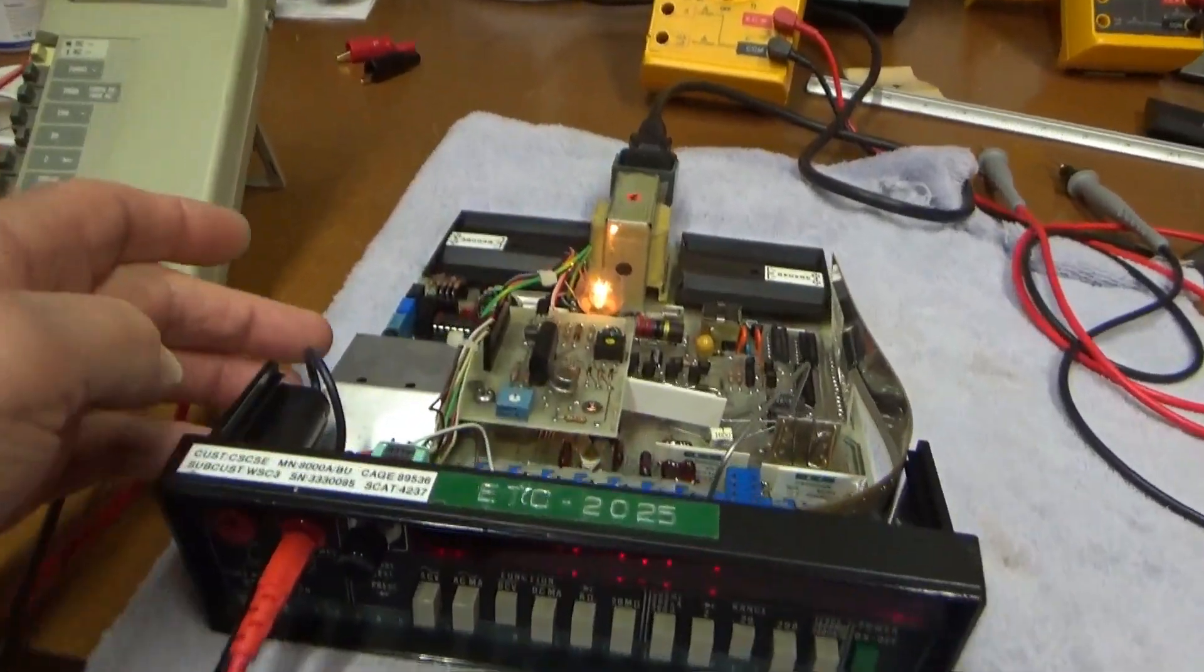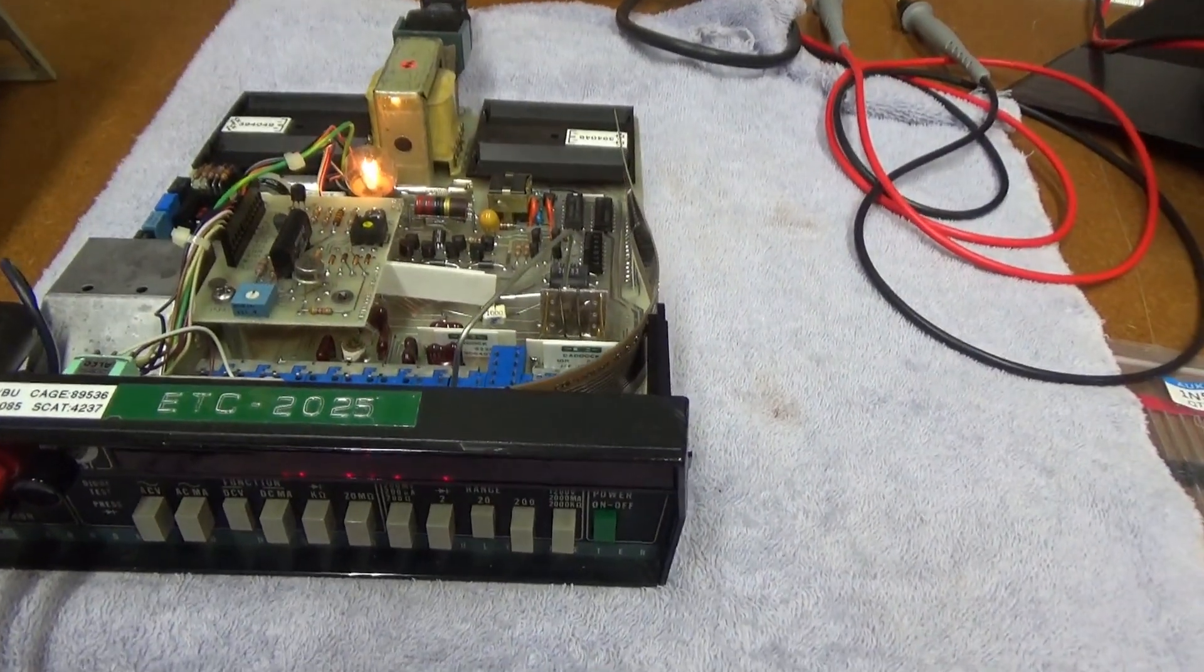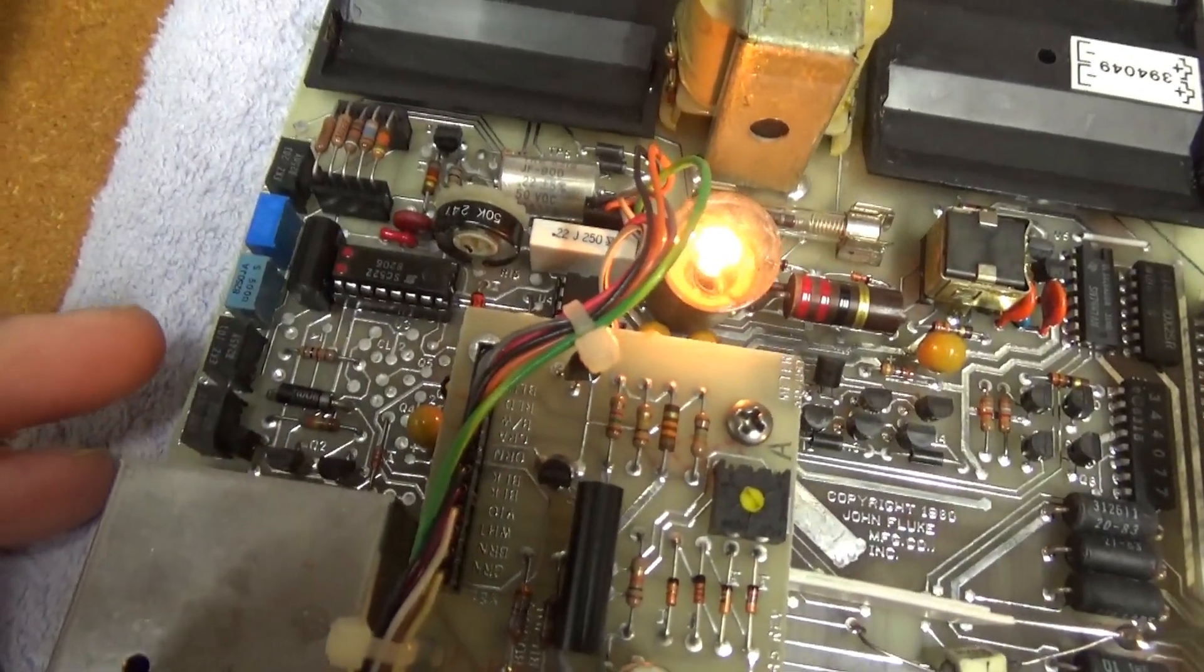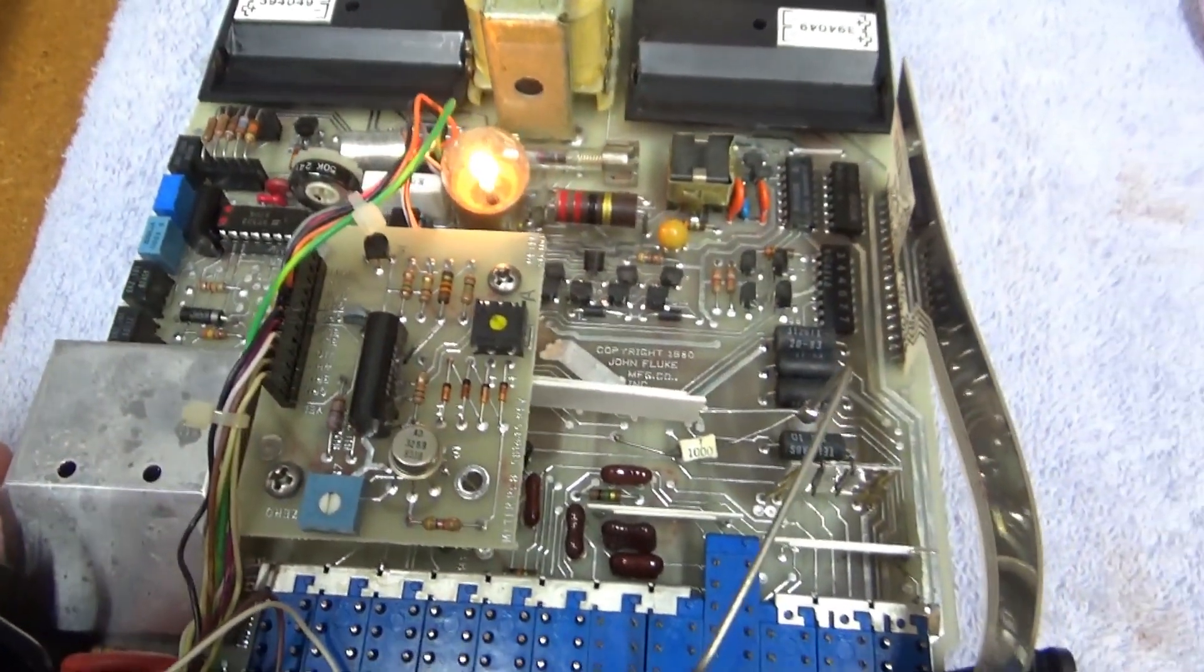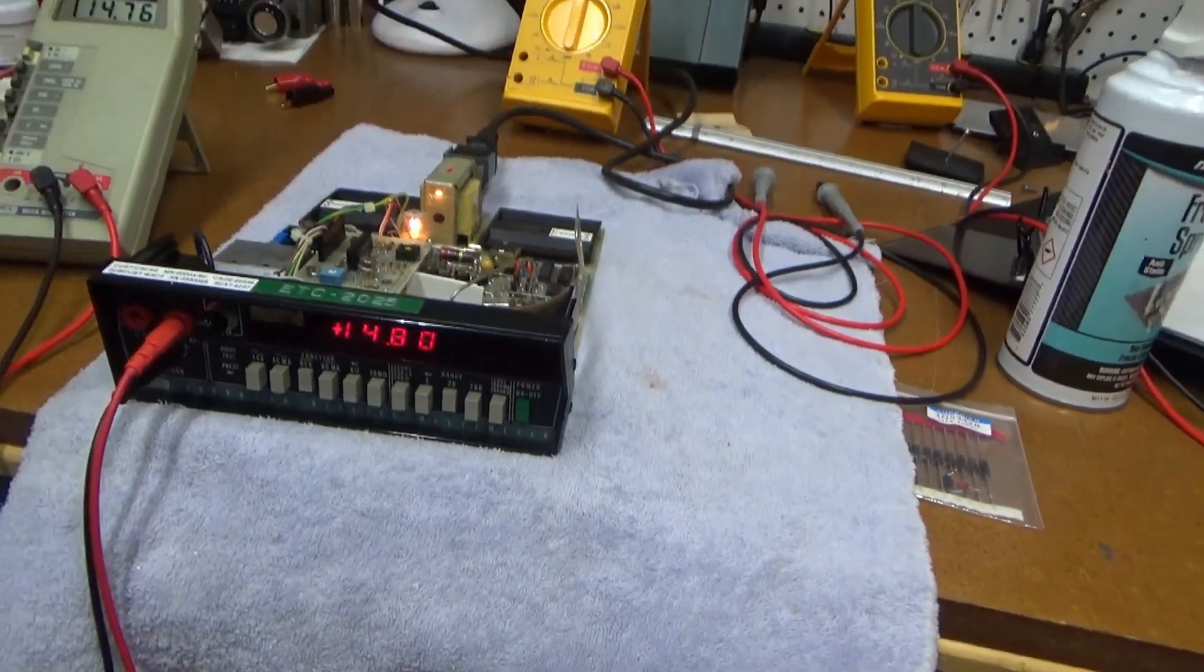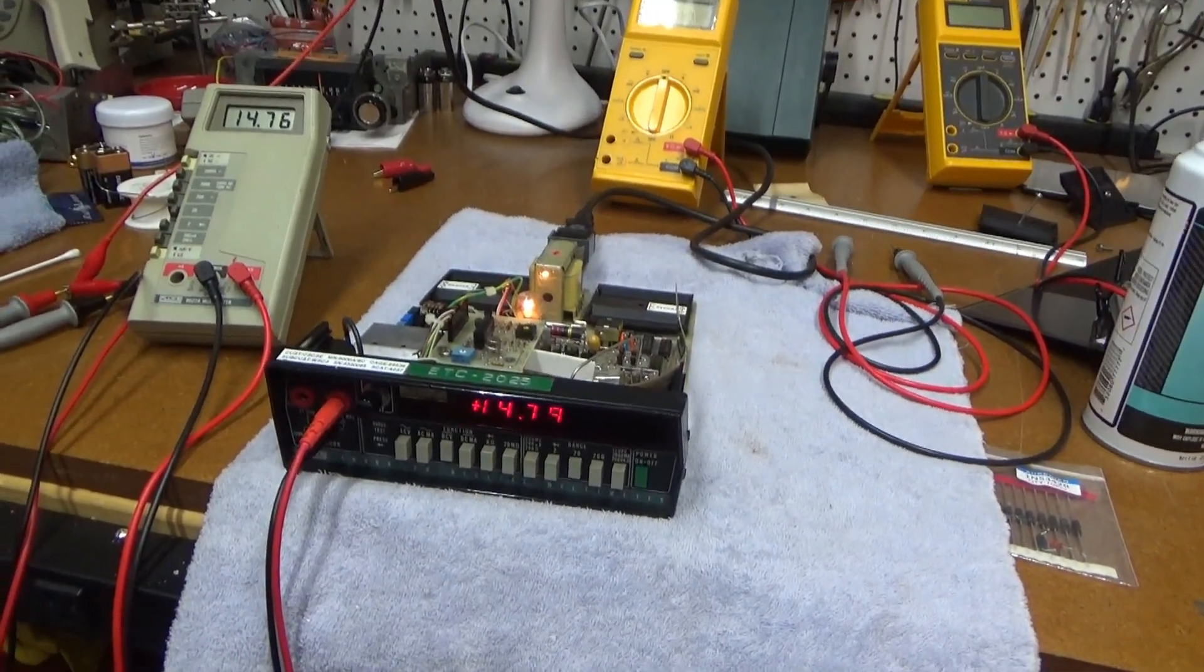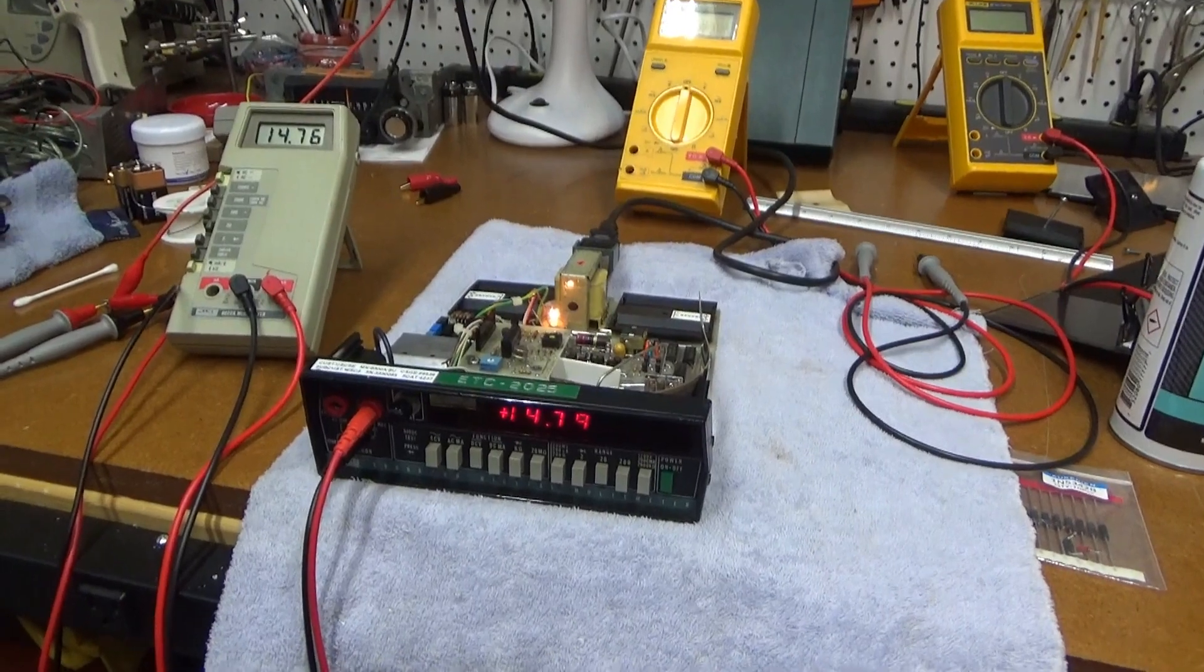So I think that's where I'm going to leave it. I've tweaked on the adjustments over here to get it as close as I can, just on the DC voltage and the resistance. The other ones seem to be fairly close, so I won't mess with them. So that's where it'll stand for now. I'll go ahead and maybe put it back in the case, see how she works, and wait for those batteries to arrive.